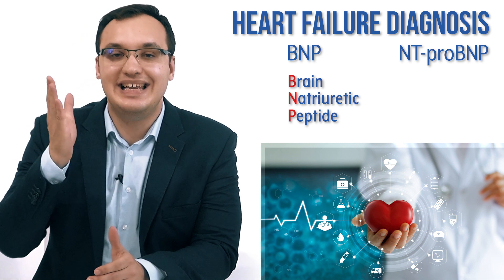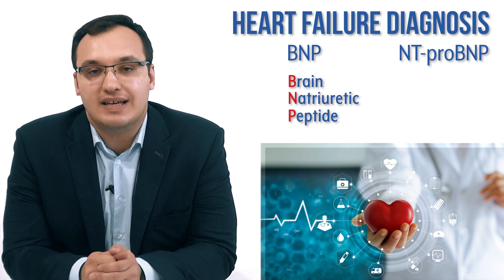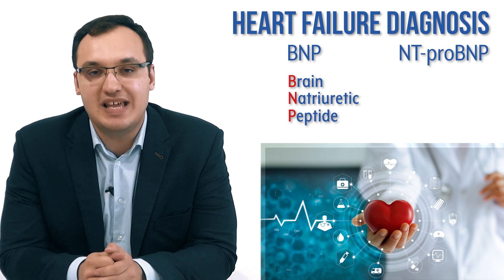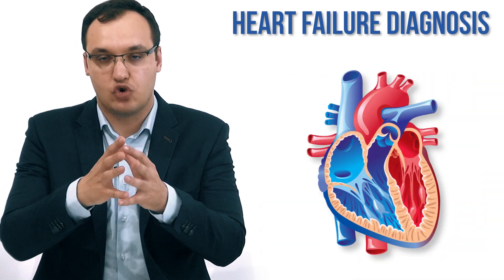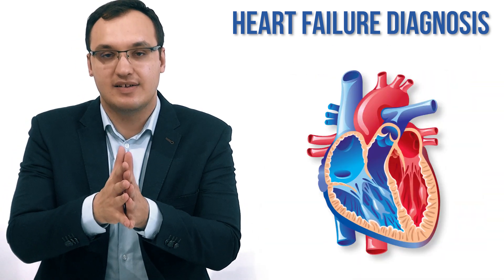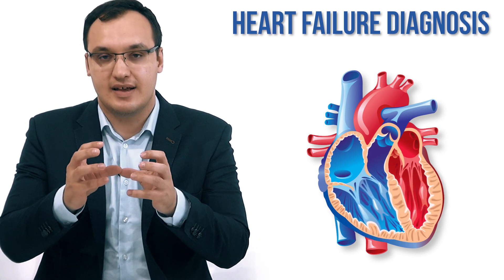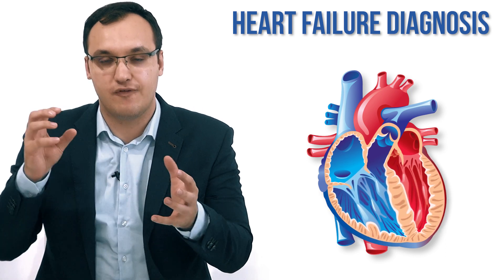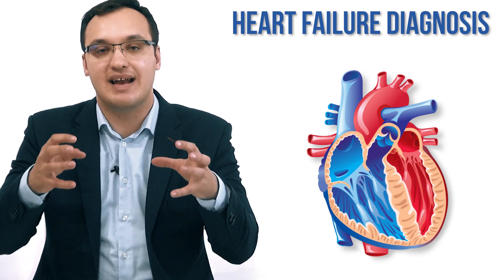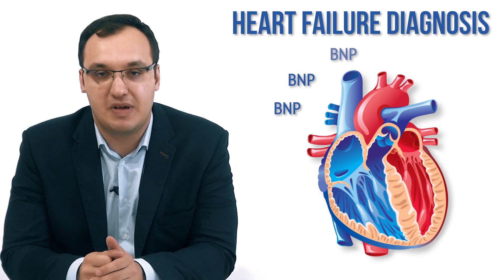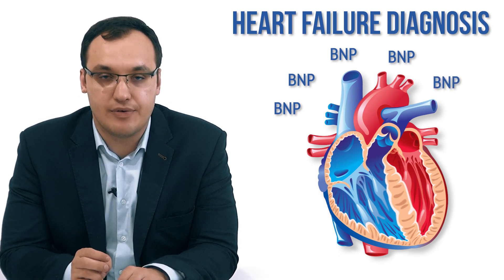The NT-proBNP is just the molecule cleaved at another point. These BNP peptides are released when the heart ventricles are getting widened because of pressure — a lot of blood flows into the ventricle, it dilates, and then it releases BNP.